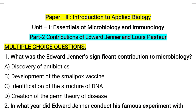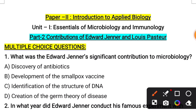The first question is: what was Edward Jenner's significant contribution to microbiology? Options are: discovery of antibiotics, development of smallpox vaccine, identification of the structure of DNA, creation of the germ theory of disease. The correct answer is: Edward Jenner developed the smallpox vaccine.